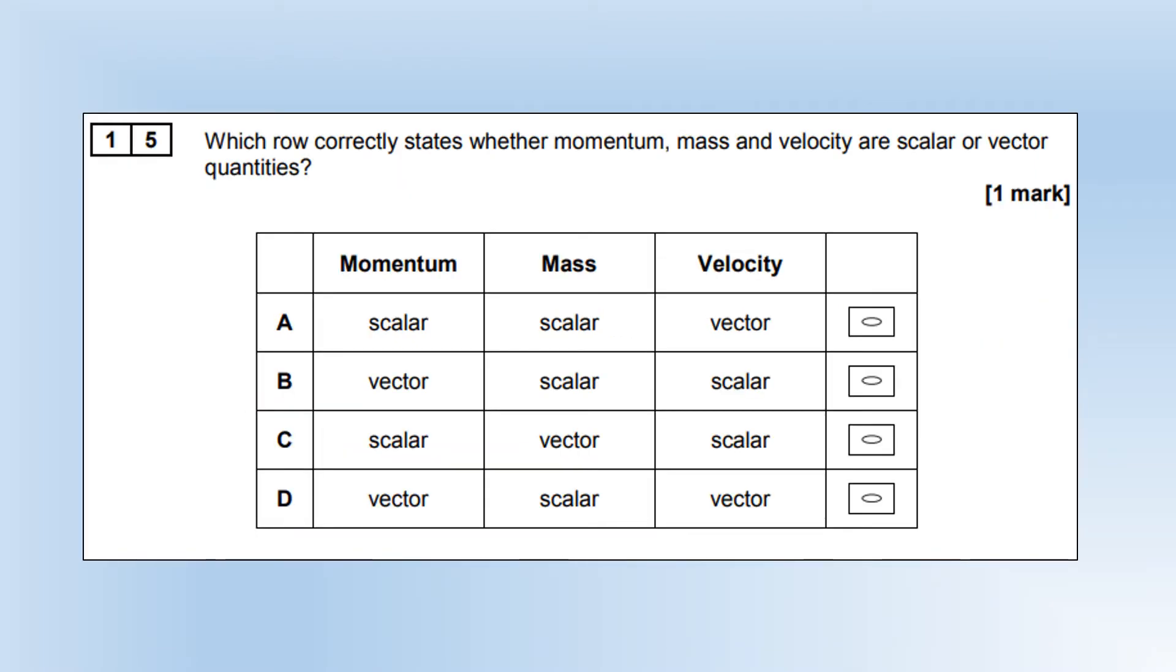Which row correctly states whether momentum, mass, and velocity are scalar or vector? So momentum is a vector, so it's either B or D. Mass is a scalar, still B or D. Velocity is a vector, so it's option D.